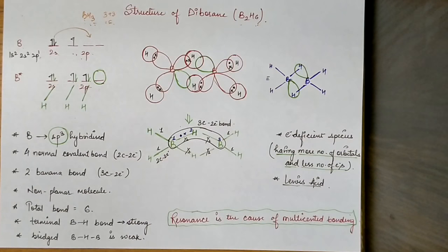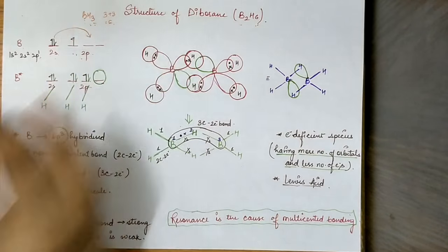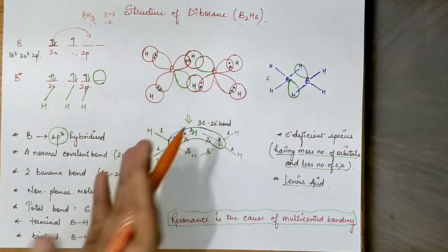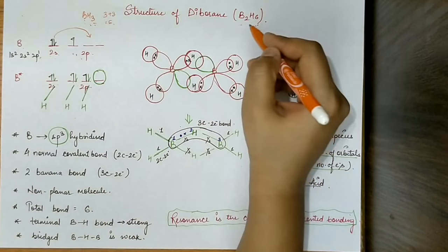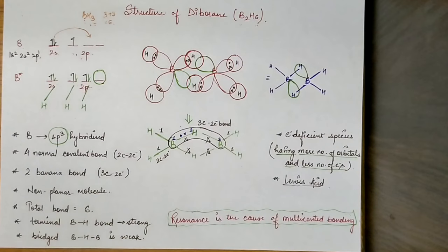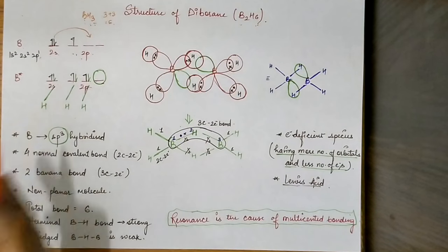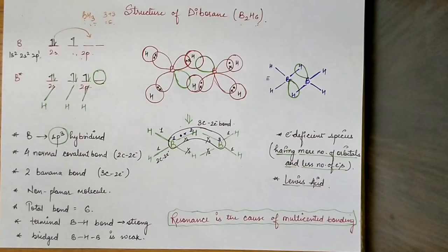Since the octet of BH3 is not complete, this molecule is not stable. So it is clear that BH3 does not exist as a stable molecule. But rather than forming BH3, why does it form B2H6? It forms its dimer because the dimeric form is more stable than the monomeric form.